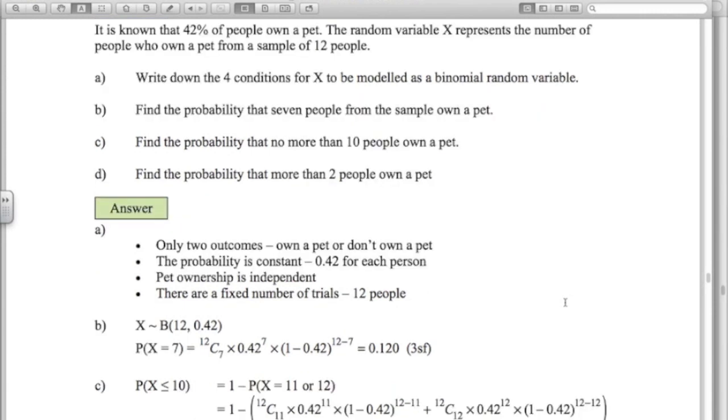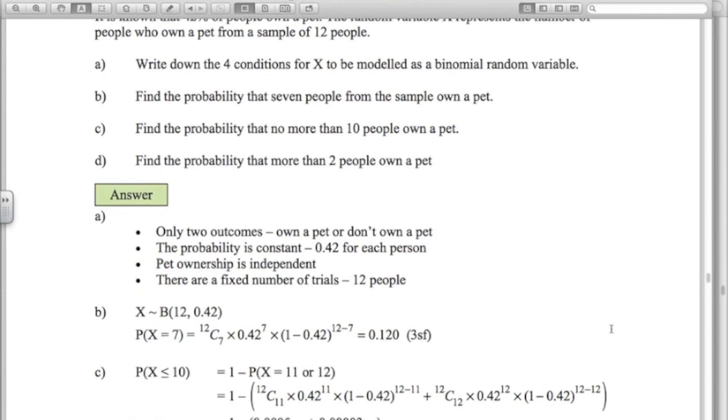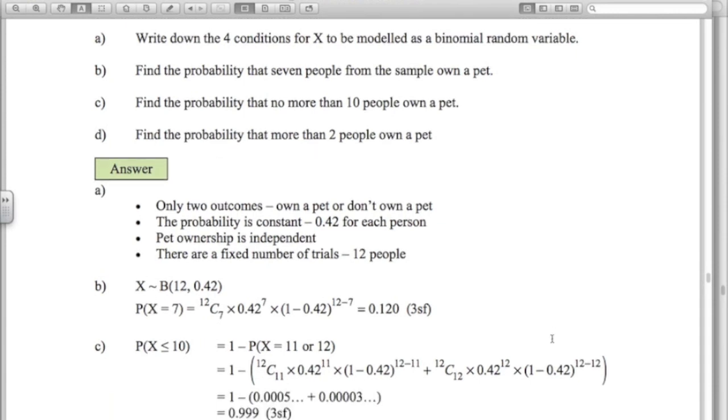Part c, the probability that no more than 10. No more than 10, so that includes 10. So that is 0, 1, 2, 3, 4, 5, 6, 7, 8, 9, 10. Wow. If you want to use the formula that many times, you'll be there all day. It's a much easier way. That is 1 minus the probability that 11 or 12 people own a pet. And now we only have to use the formula two times here. It's still a very, very good chance that you're going to have no more than 10 people owning a pet, given that any one person has a 42% chance of owning a pet. So 0.999.